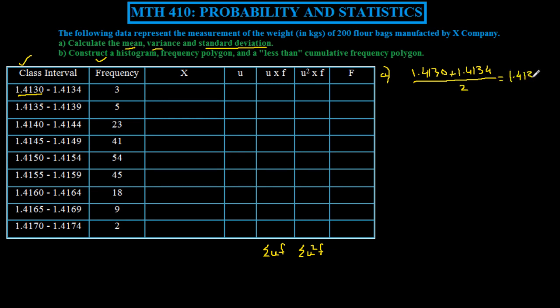u is calculated by the formula x minus a over c. X we have, which is a value here. a is the midpoint of the interval with the highest frequency. The interval that has the highest frequency, we're going to denote as u equal to 0. When we define this, we set a equal to the midpoint of this value, which is 1.4152.